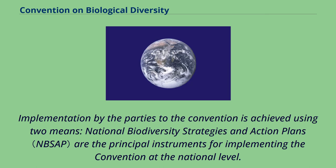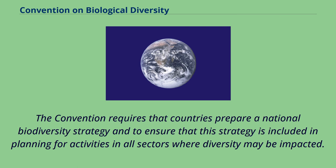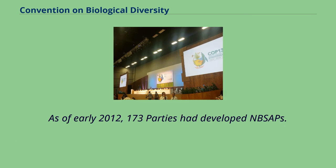Implementation by the parties to the Convention is achieved using two means. National biodiversity strategies and action plans are the principal instruments for implementing the Convention at the national level. The Convention requires that countries prepare a national biodiversity strategy and ensure that this strategy is included in planning for activities in all sectors where diversity may be impacted. As of early 2012, 173 parties had developed NBSAPs.